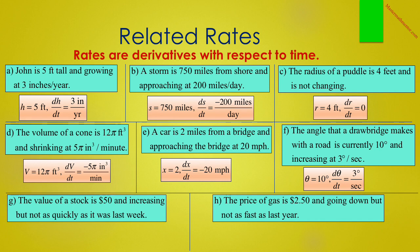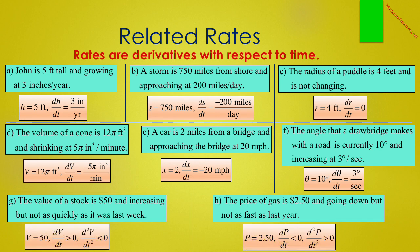In F, the angle that a drawbridge makes with a road is currently 10 degrees and increasing at 3 degrees per second. So theta equals 10 degrees, and dθ/dt equals 3 degrees per second. G and H are trickier because they discuss changes in rates. We will discuss this fully when we get to the section on function analysis. G says the value of a stock is $50 and increasing, but not as quickly as it was last week. That makes V equal to 50. And since V is increasing, DV/dt is positive. However, if it is not increasing as quickly as last week, the rate of change of increase is getting smaller, and therefore the second derivative of V with respect to time is negative.